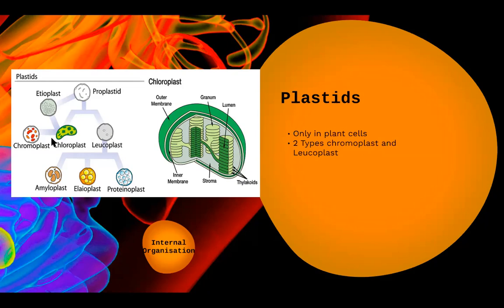Chromoplasts are of two types. Regular chromoplasts impart color to flowers, fruits, and vegetables that are not green — for example, the red color of an apple comes from chromoplasts, and the purple color of an eggplant and the pink color of a rose also come from chromoplasts. But when we talk about green color in leaves and stems, those are entirely dependent on a special plastid — chloroplast.